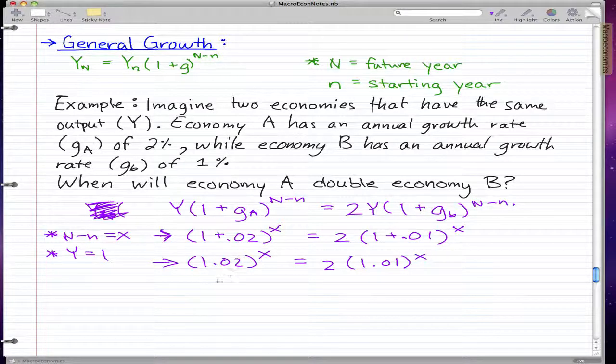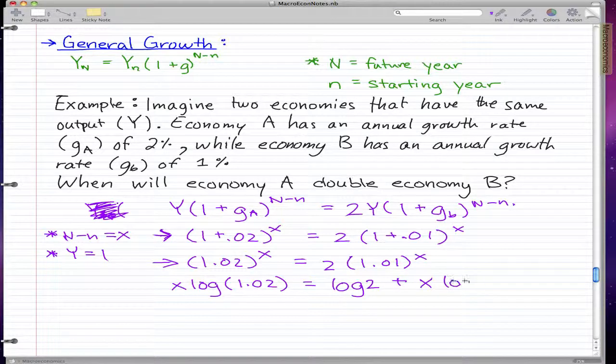So we log both sides, so we're using logarithms. When we log, it's a rule of logarithms that we can bring down the X. So we get X log 1.02, and then we log this side as well, so we get log 2 plus X log 1.01.